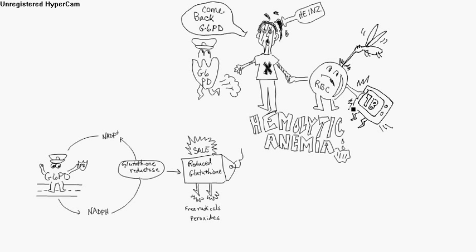If G6PD is deficient, not only does it cause resistance to malaria — which is a good thing — but the bad thing it causes is hemolytic anemia. This is the anemia where you get Heinz bodies. I'll tell you why as we go through the HMP pathway.